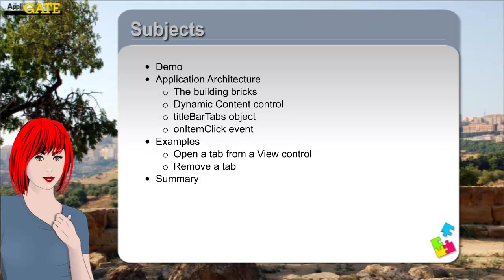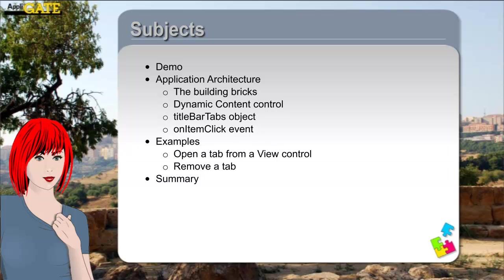Also we explain how to use the Title Bar Tabs object. The Title Bar Tabs is a part of the new application layout where you can display tabs or a title. To respond to a user's click on the tab, we show you how to discover it using the on-item click event of the application layout. In the examples we show you the specific code we have used in the application. You can find the code examples also as a link under the Resources section of this course.